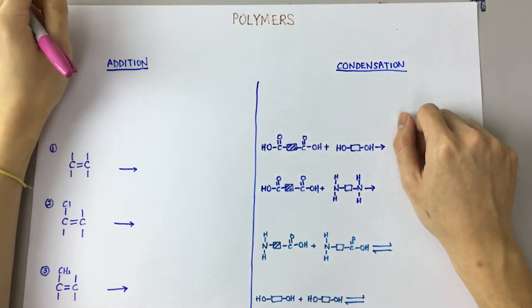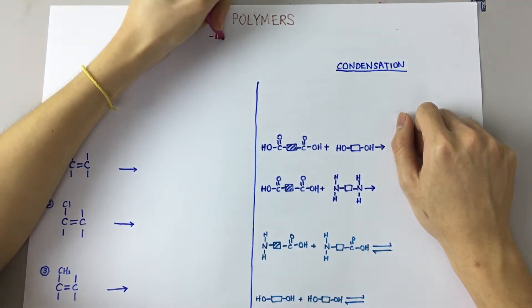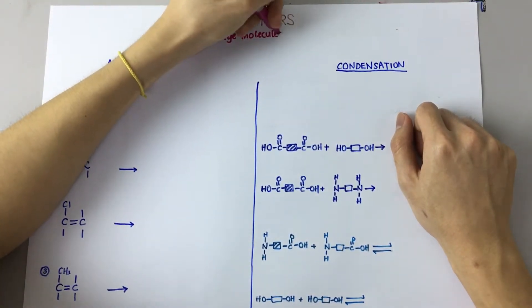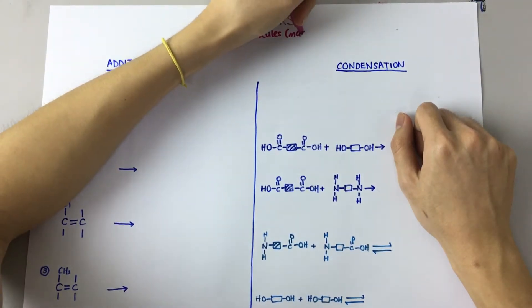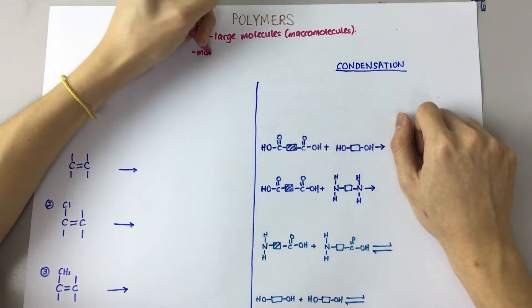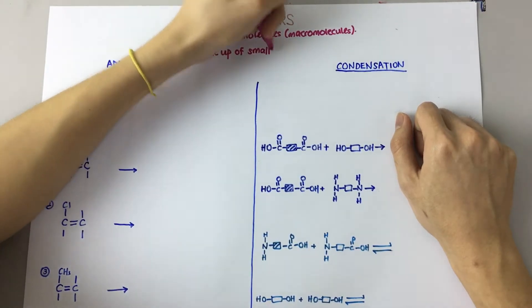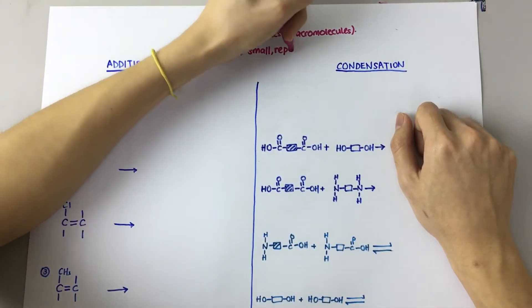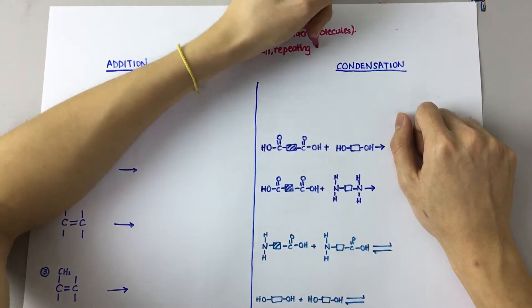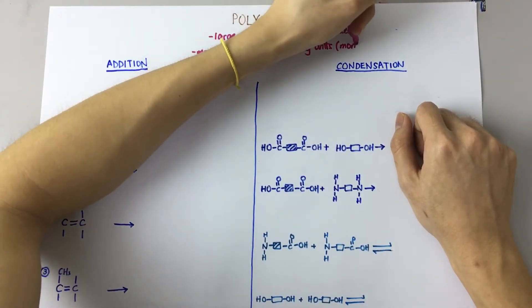Alright, today we'll be talking about polymers. So what are polymers? Polymers are large molecules, or we know them as macromolecules, and they're made out of small repeating units that we call monomers.